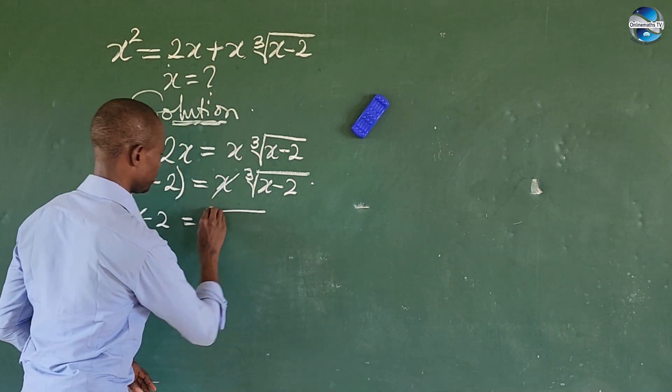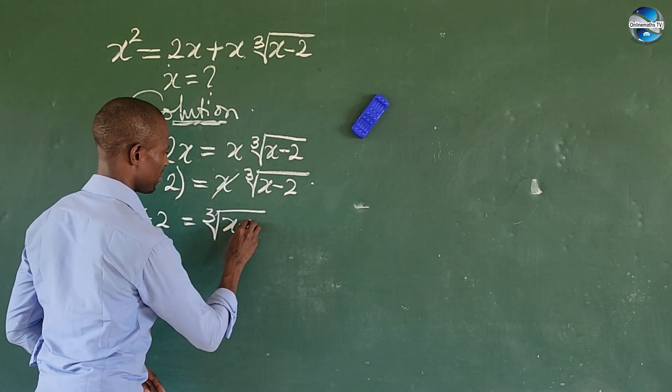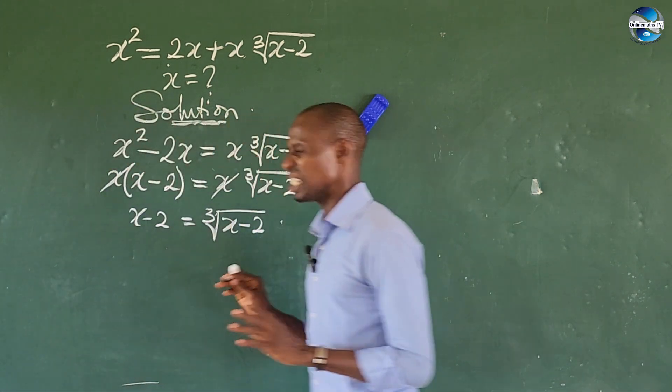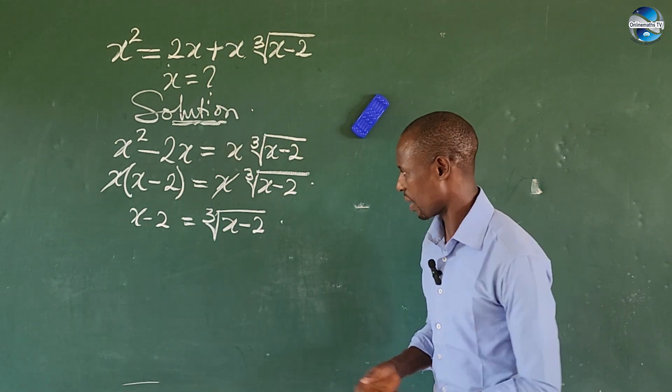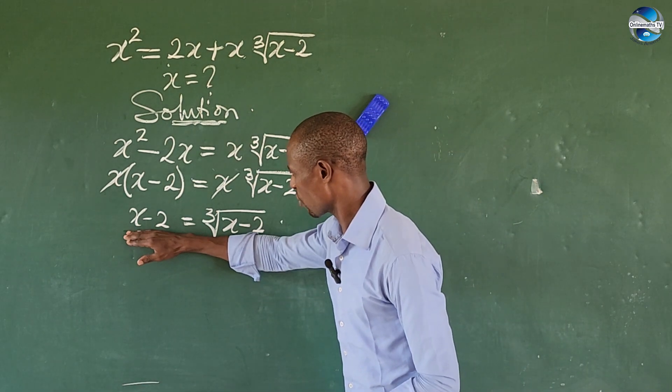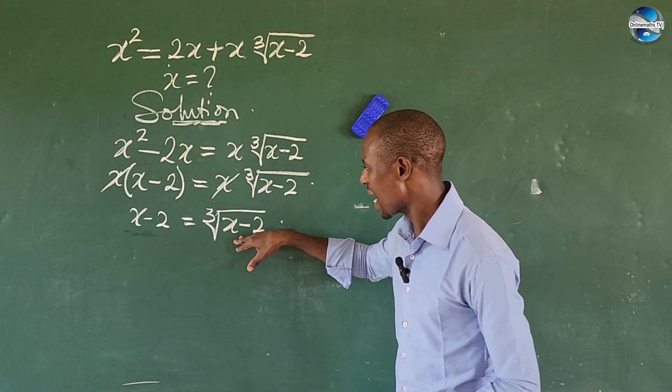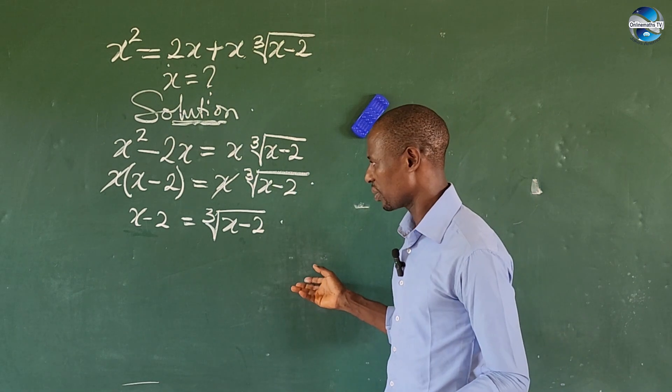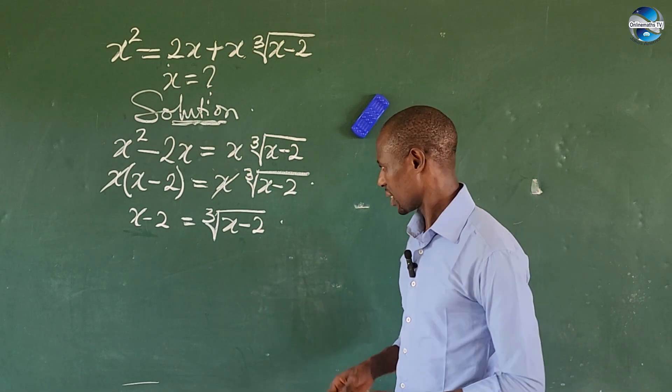We are now left with x minus 2 equals the cube root of x minus 2. Very easy. Now that we have this quantity x minus 2 inside this radical, what do we do?